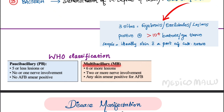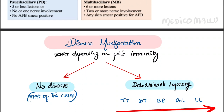The WHO classifies leprosy into paucibacillary and multibacillary. Paucibacillary is when the lesions are five or less, with no nerve involvement or at most one nerve involvement, and the acid-fast bacilli smear is negative. If the patient has six or more lesions, or two or more nerve involvements, or any skin smear positive for AFB, then it is classified as multibacillary.